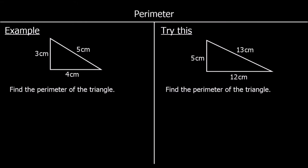The perimeter of a shape is the distance all the way around the edge of the shape. Here we've got a question that says find the perimeter of the triangle. It's the total distance around the edge of the shape. So we've got three sides to a triangle: three centimeters, four centimeters, and five centimeters. The perimeter will be these lengths added together. So three plus four plus five. Three plus four is seven. Seven plus five is 12. So the perimeter is 12 centimeters.